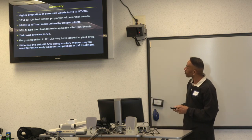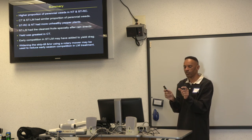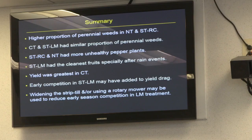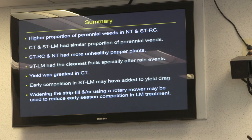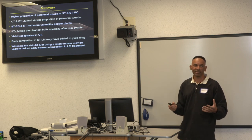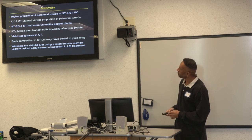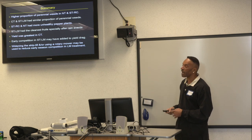In summary, no-till and strip-till roller crimp had a higher proportion of perennial weeds, while strip-till living mulch controlled perennial weeds better — both by tilling where peppers were planted and by suppressing weeds with the living mulch between rows. The strip-till roller crimp and no-till had more unhealthy pepper plants from an unknown disease. The strip-till living mulch had the cleanest fruit, especially after rain events, likely due to less soil splashing. We think improvements — widening the strip-till to around 16 inches and mowing the living mulch shorter — could reduce the early competition and yield drag.